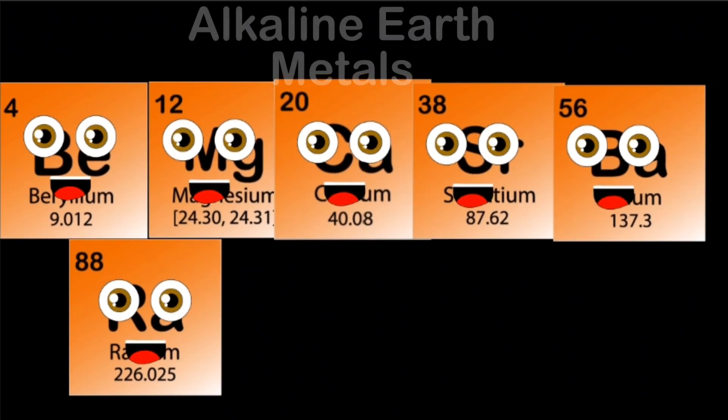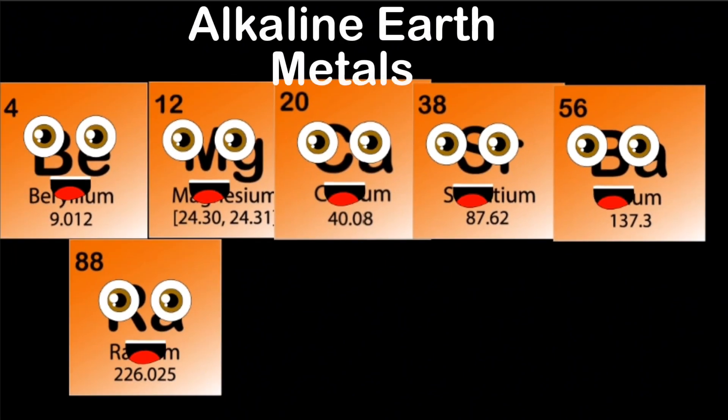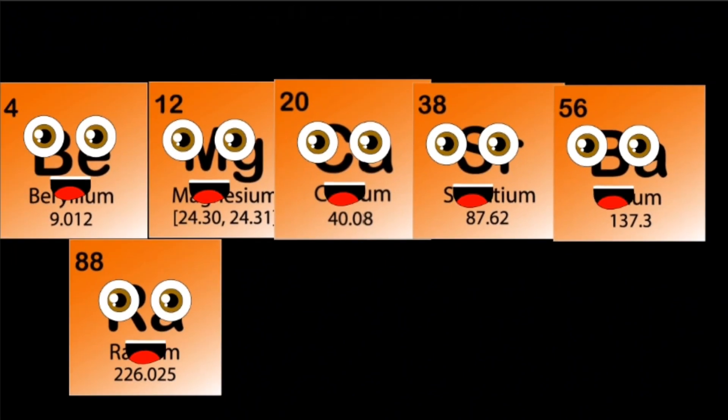We are the alkaline earth metals, we are in column two in the periodic table. There's six elements in our crew. To find the first element, you must go to column two, line up the second period. We will introduce ourselves to you.